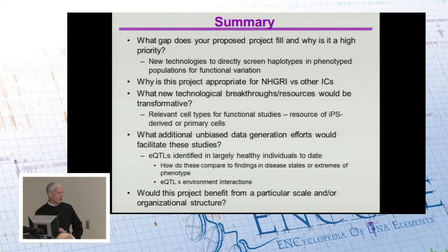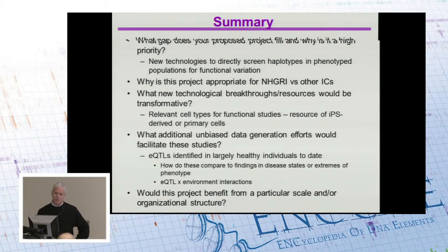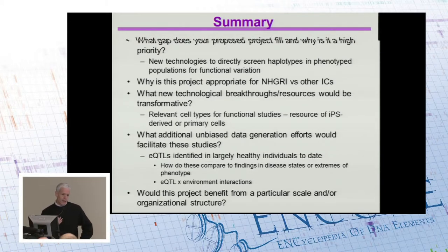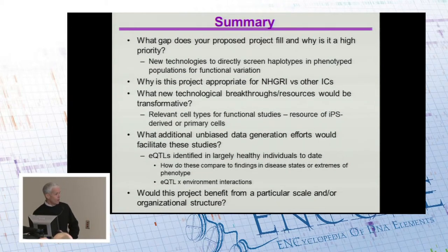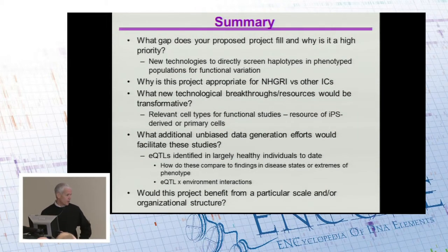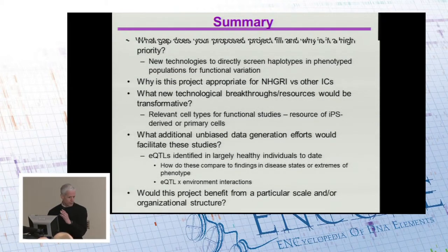Thinking about what other resources might be of value, one of the challenges as someone interested in phenotypes is that getting relevant cell types for functional studies is difficult. Developing resources — whether IPS-derived, primary cells, or other cell types — so that we're not forever looking at cancer cell lines is important. Specifically in the diabetes world, beta cell lines that recapitulate function are hard to come by. We've also heard a lot about eQTLs identified in basal states; understanding them in a perturbed state, perhaps in the presence of insulin resistance, would be of great interest.